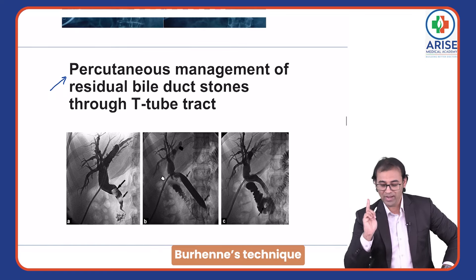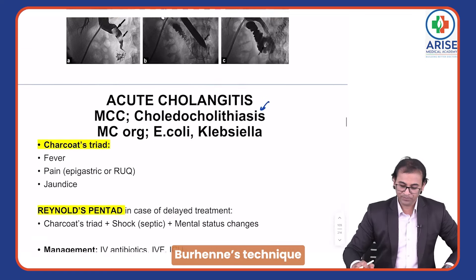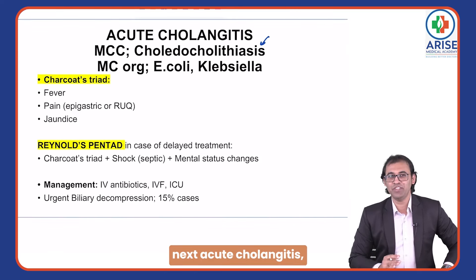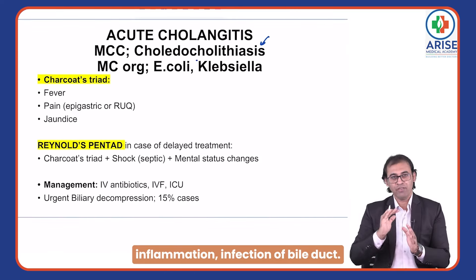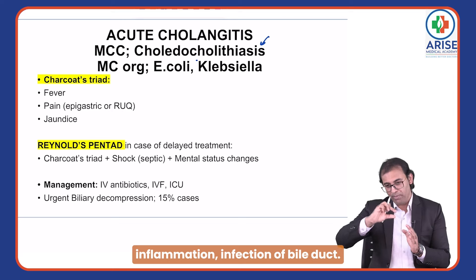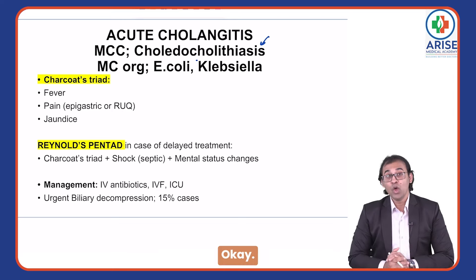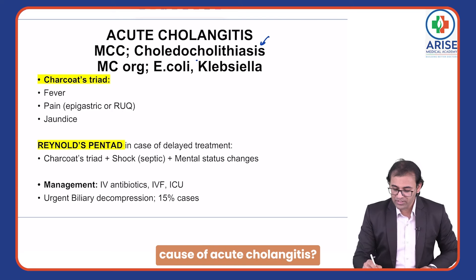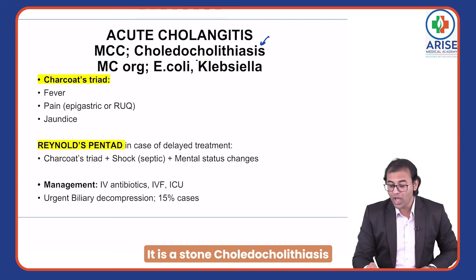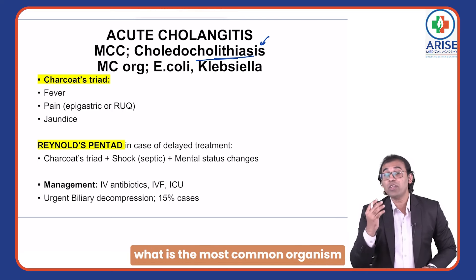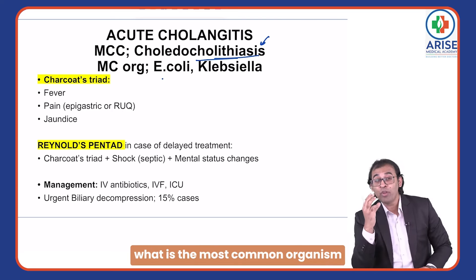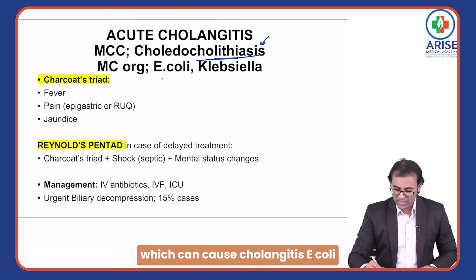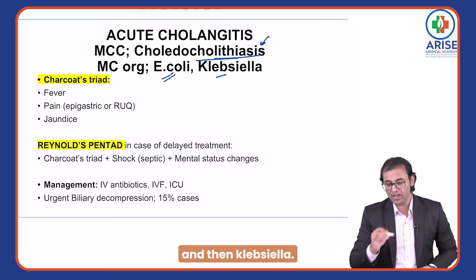Next is acute cholangitis — inflammation and infection of the bile duct. The most common cause is choledocholithiasis. The most common organism causing cholangitis is E. coli, followed by Klebsiella.